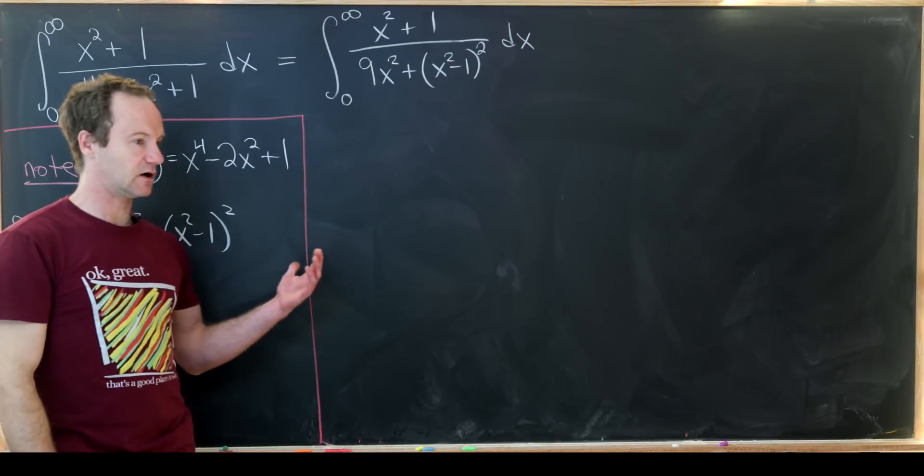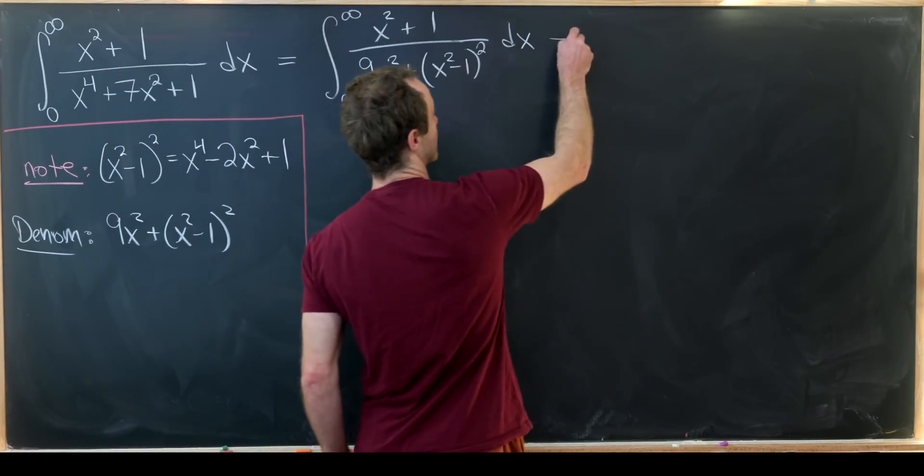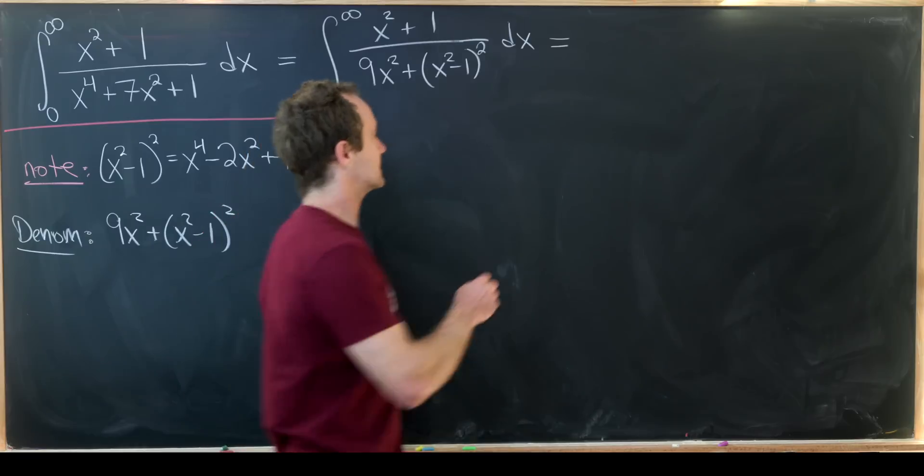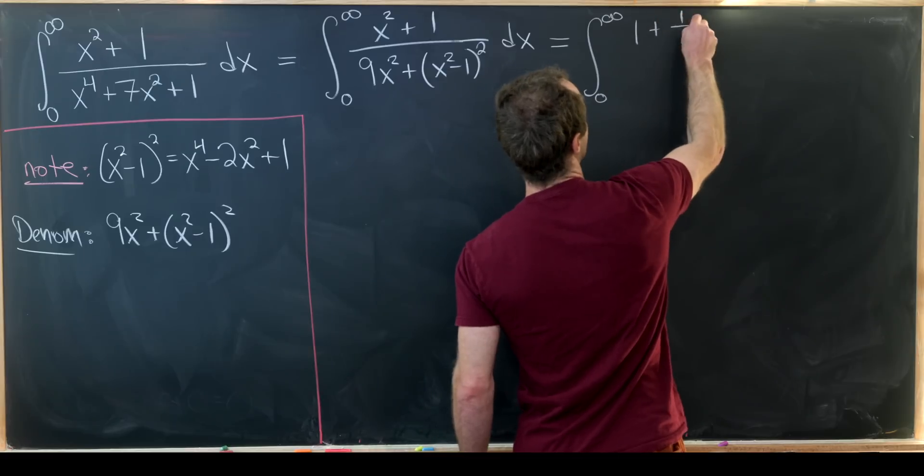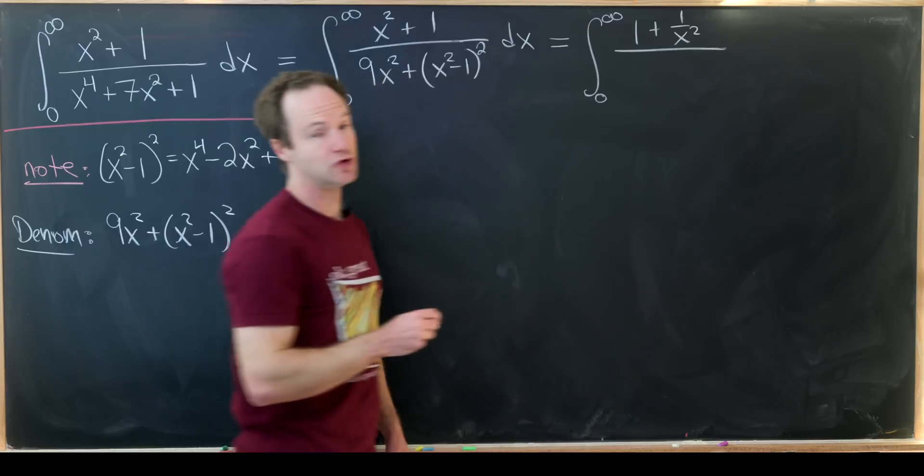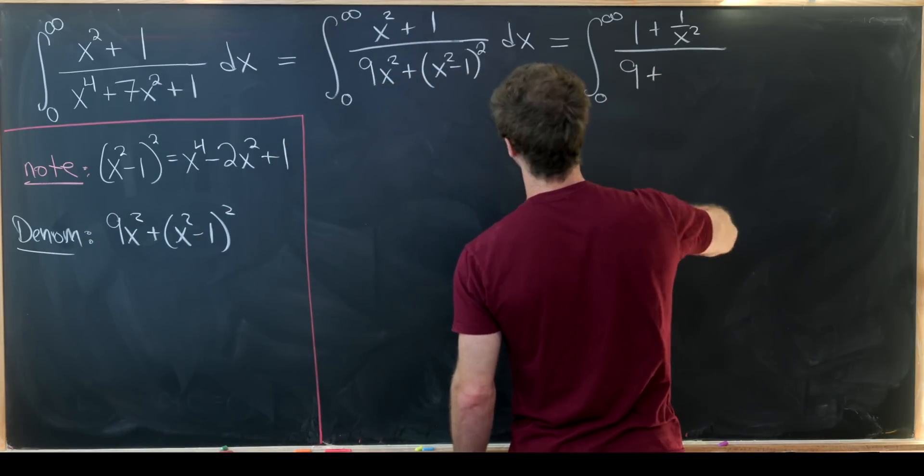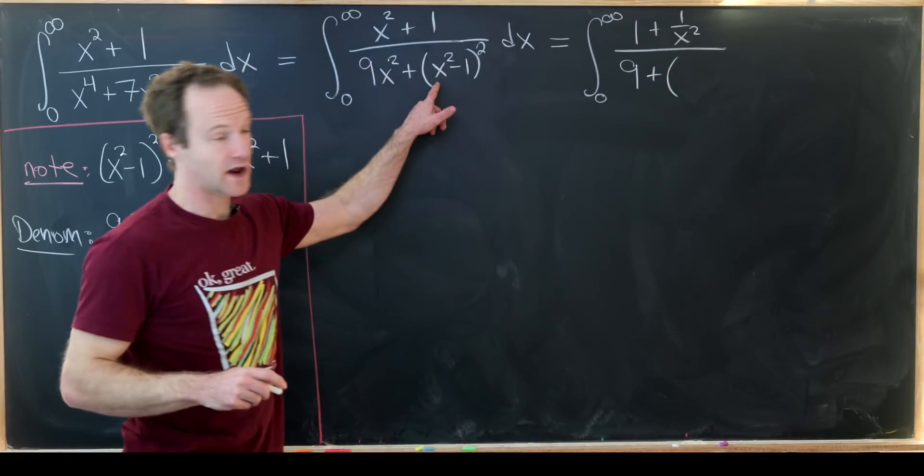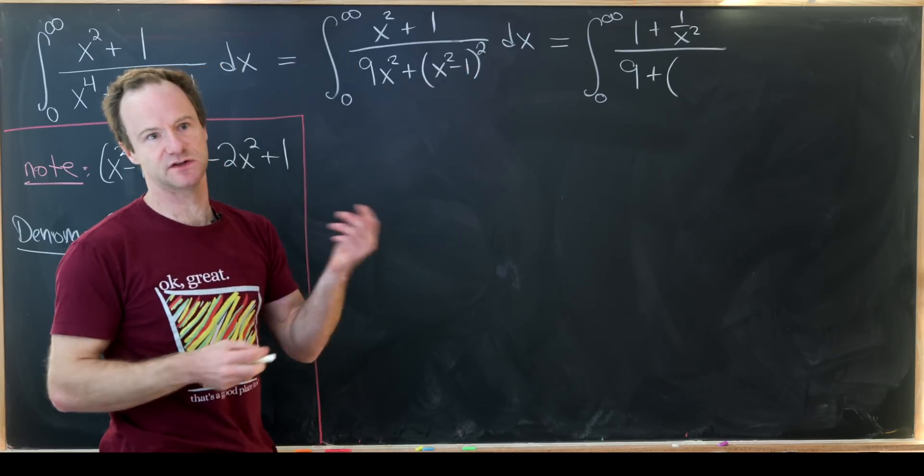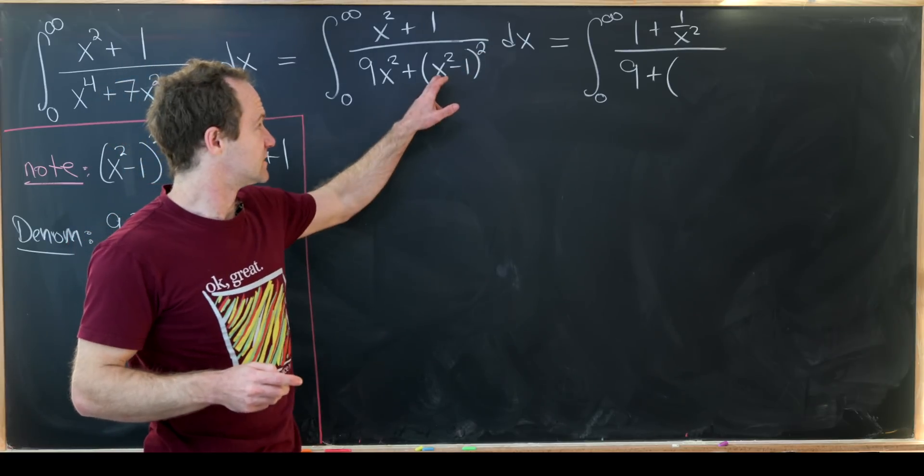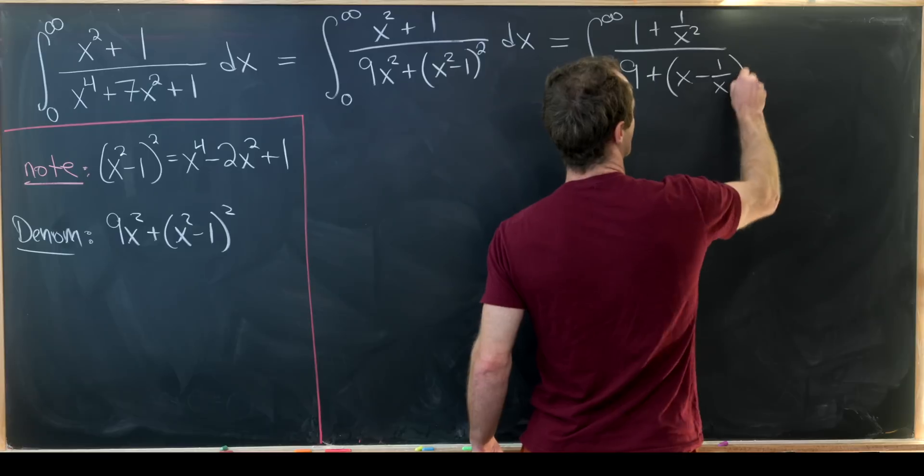Next I'll multiply the numerator and the denominator by 1 over x squared. Let's see what that leaves me with. I have the integral from 0 to infinity of 1 plus 1 over x squared in the numerator. In the denominator I have 9 plus—when I bring a 1 over x squared inside of the square it turns into 1 over x—so that'll cancel this x squared down to an x and leave me with minus 1 over x.